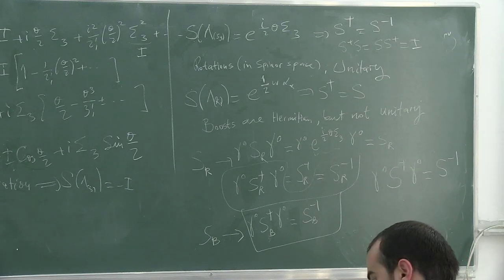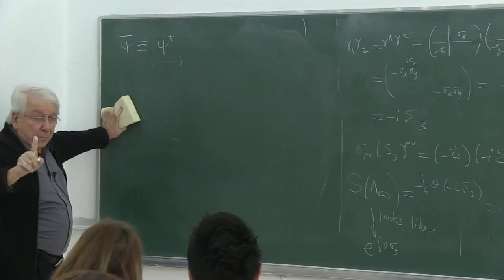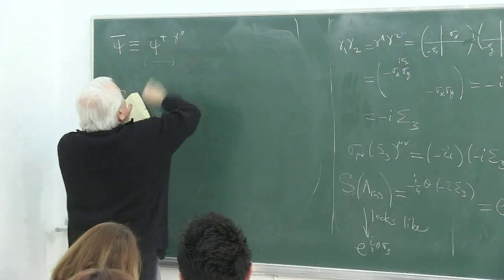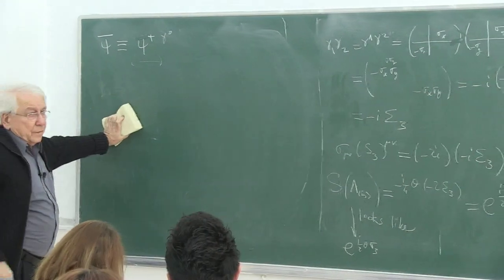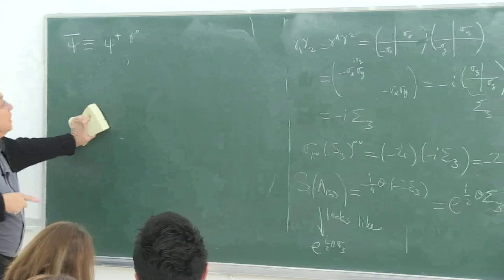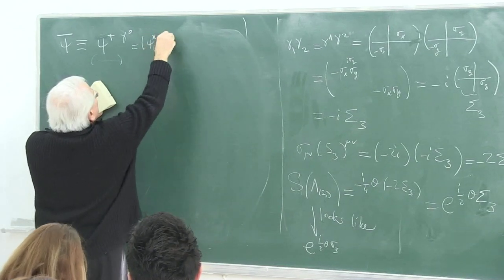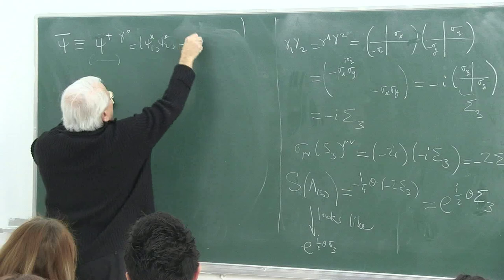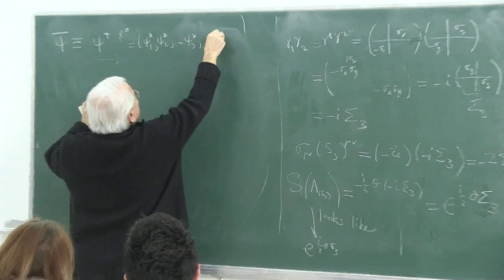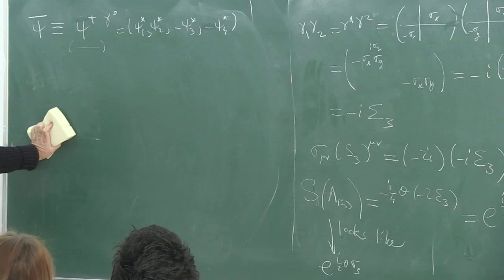I define psi-bar as the conjugate row vector (psi-1 star, psi-2 star, psi-3 star, psi-4 star) times gamma-zero. So this is the definition. Instead of psi-dagger alone, I consider psi-bar as psi-dagger times gamma-zero. As we will see with discrete symmetries later, the negative energy portions of the spinor are not only conjugated, their signs are also reversed — and psi-bar is that kind of spinor.